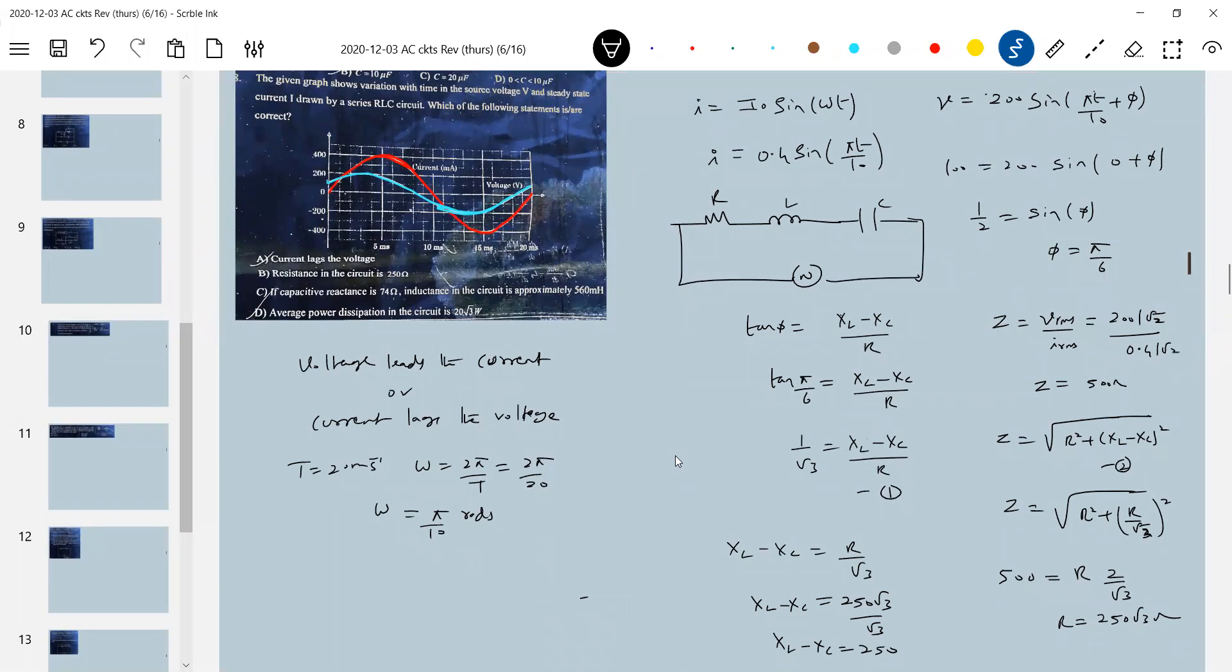And then what about average power, can we say anything about average power? I think we know the RMS value of current, so what is average power, what are all various formulas?